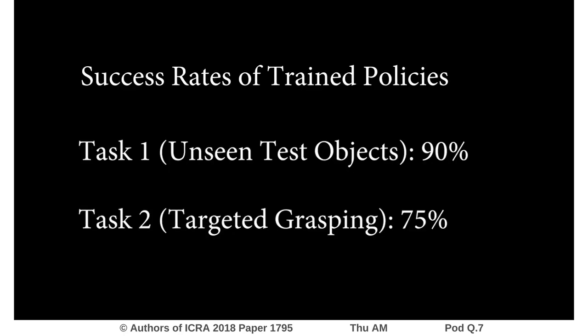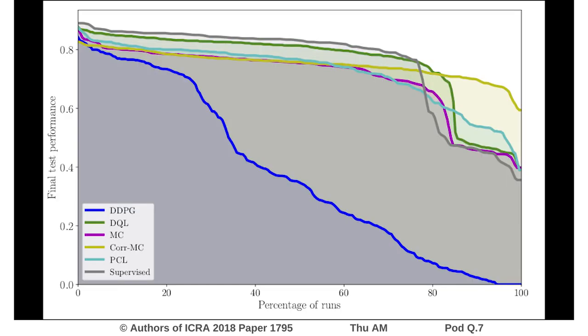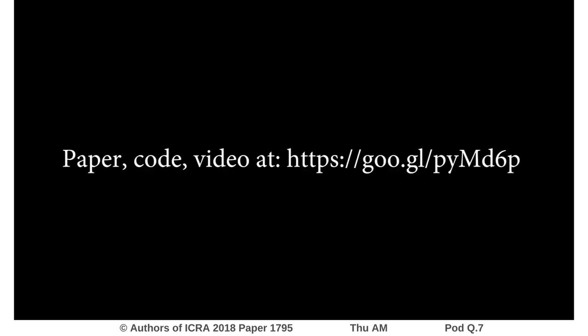We are able to achieve around 90% grasp success on unseen objects and 75% grasp success on targeted grasping. We also present hyperparameter studies evaluating the relative stability of various RL algorithms and other empirical comparisons, which can be found in the paper.